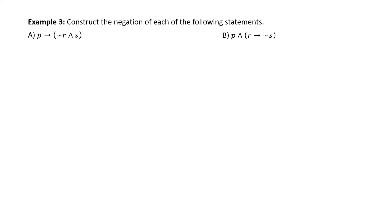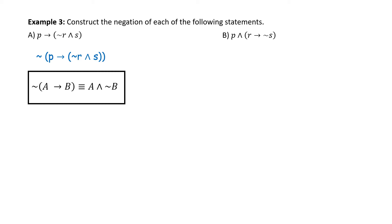Example — construct the negation of each of the following statements. Notice that this time we have no words. Part A: P implies, in parentheses, not R and S. We want to negate P implies (not R and S). We'll use the definition: the negation of A implies B equals A and not B. Applying that gives us P and not, in parentheses, not R and S.